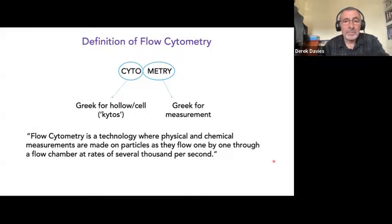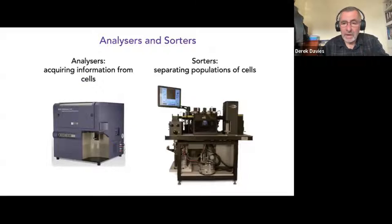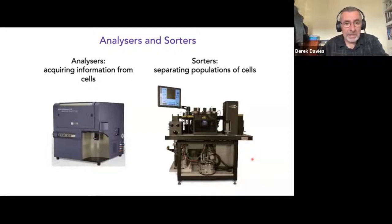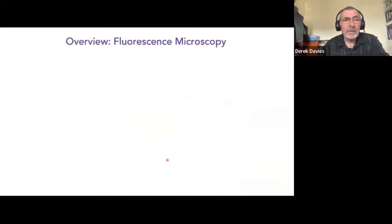Flow cytometers come in two different flavors: analyzers and sorters. Analyzers give us information about our cells but we don't retrieve them. Cell sorters actually allow us to retrieve a population of cells of interest so we can take them away for further study — it might be regrowing them, transplanting them, or extracting DNA, RNA, or protein. The principles of how these two work are very similar.